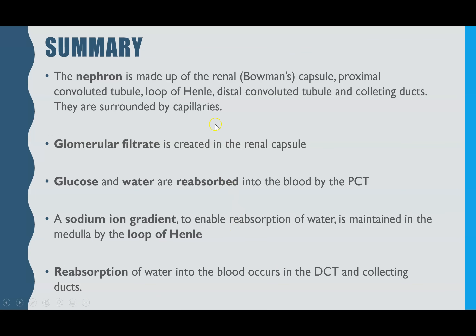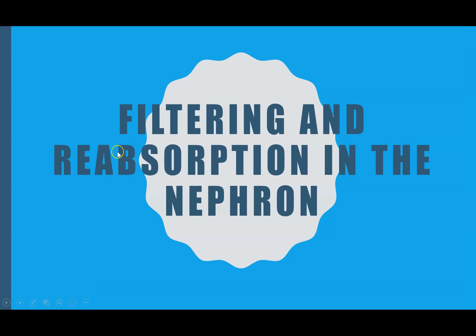To summarise: the nephron is made up of the renal capsule, PCT, loop of Henle, DCT, and collecting ducts, all surrounded by capillaries. The glomerular filtrate is created in the renal capsule. Glucose and water are reabsorbed back into the blood by the PCT. The sodium ion gradient is maintained in the loop of Henle to enable water reabsorption. Further reabsorption happens in the DCT and collecting ducts. That is the whole process of ultrafiltration and reabsorption and how urine is created.